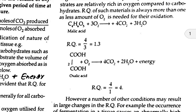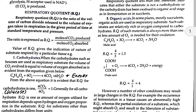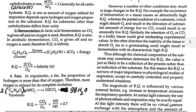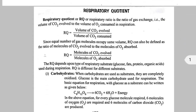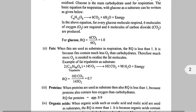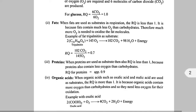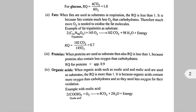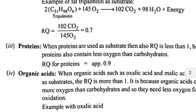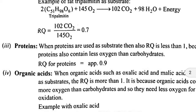For oxalic acid (formula: (COOH)₂), two moles of oxalic acid are oxidized by one mole of oxygen, producing four moles of CO₂ and two moles of H₂O. RQ equals 4 divided by 1, so the value of RQ is 4 for oxalic acid. For protein, less oxygen is present than in carbohydrate, so the RQ value is approximately 0.9.